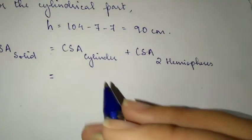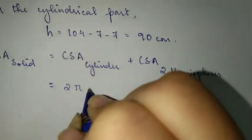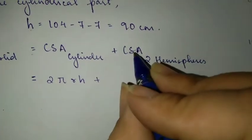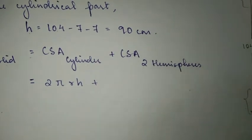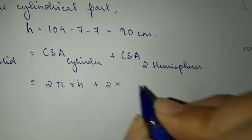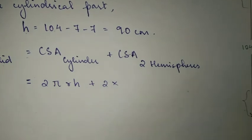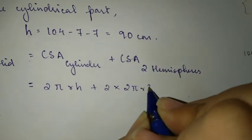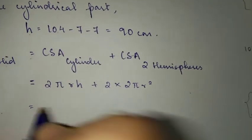Now let's solve this. Curved surface area of a cylinder formula is 2πrh, plus curved surface area of two hemispheres, which is two times 2πr², so you will get 2πr² squared.